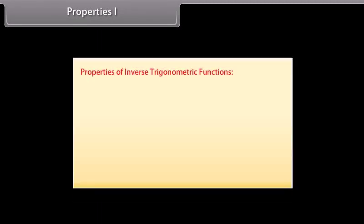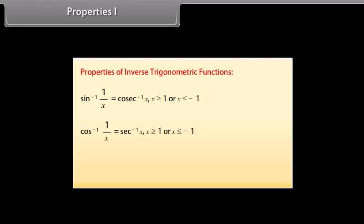Properties 1 of inverse trigonometric functions: sin⁻¹(1/x) = cosec⁻¹x, for x ≥ 1 or x ≤ −1. cos⁻¹(1/x) = sec⁻¹x, for x ≥ 1 or x ≤ −1. tan⁻¹(1/x) = cot⁻¹x, for x > 0.